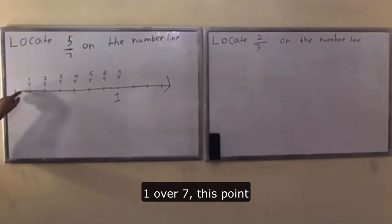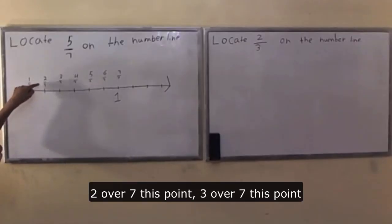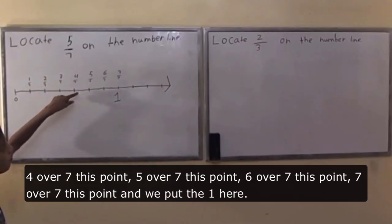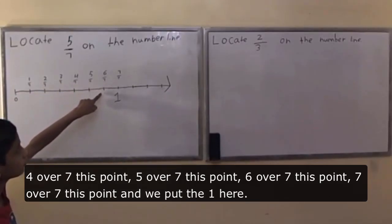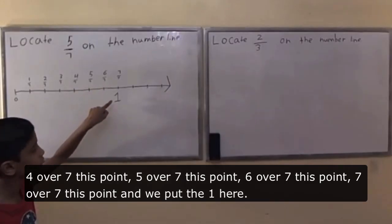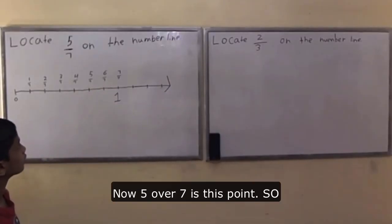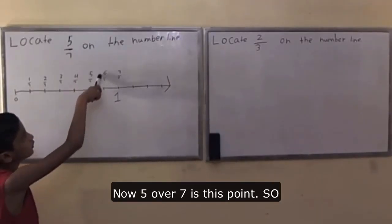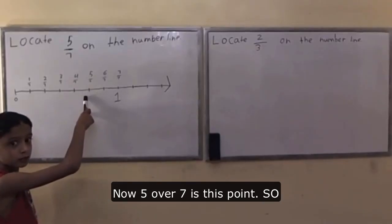1/7 this point, 2/7 this point, 3/7 this point, 4/7 this point, 5/7 this point, 6/7 this point, 7/7 this point. I would put the one here. Now, 5/7 is this point.